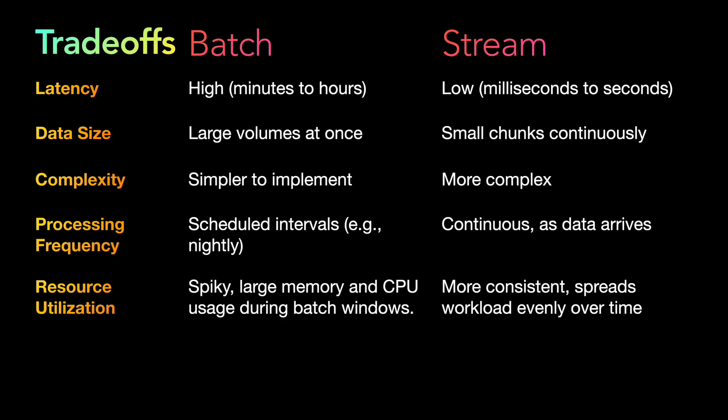In stream processing, resource utilization is more consistent because the workload is spread evenly over time. However, one negative is that because it is always on a need basis, the infrastructure must always be up — Docker containers and stream processing systems must be running at all times since data can arrive at any point. If you are using compute charged per minute it's up, stream processing can be very costly because it always has to be running whether or not it is processing data.